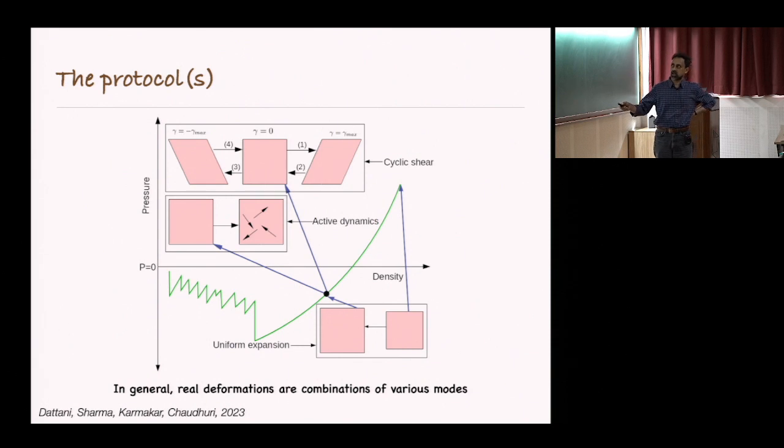We start off this glass, we are expanding it, and then we are sampling states from this and doing various kinds of deformation. One deformation we're doing is cyclic shear, basically an oscillatory shear. The other deformation is active dynamics, which is essentially taking few particles within the sample, and these have finite activity and they move around.